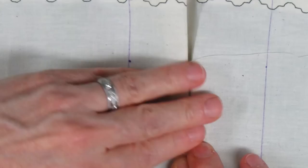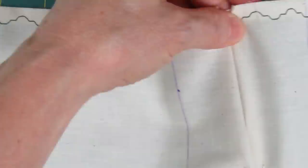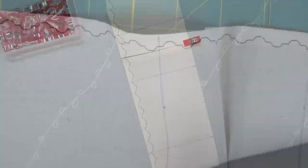And then once you have them pinned out, take it over to the ironing board and press it really well. Make sure that it's folded properly all the way up to the top, and give it a really good pressing.